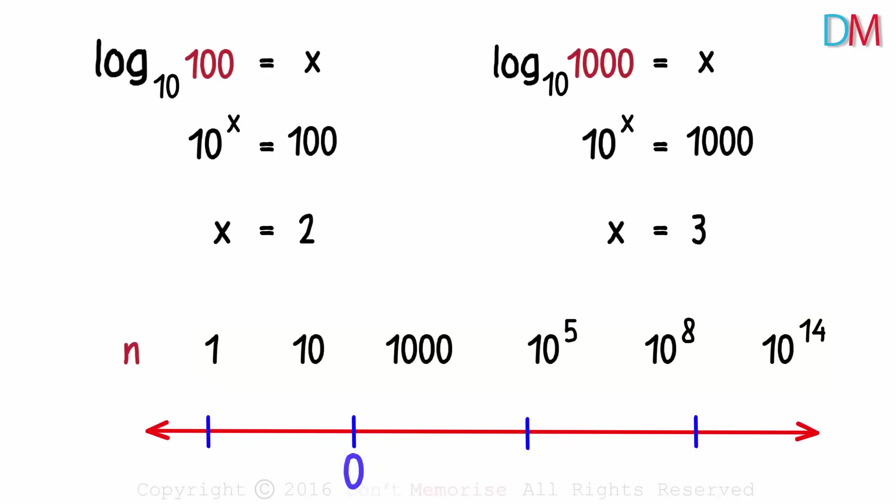If we mark 0 and 10 raised to 14 here, these tiny numbers like 1, 10 and 1000 would lie super close to 0. So what's the solution?